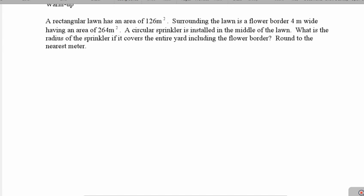Looking at this problem: a rectangular lawn has an area of 126 meters squared. Surrounding the lawn is a flower border 4 meters wide having an area of 264 meters squared. A circular sprinkler is installed in the middle of the lawn. What is the radius of the sprinkler if it covers the entire yard including the flower border? Round to the nearest meter.